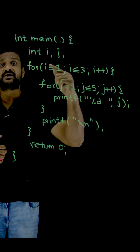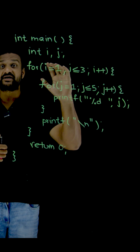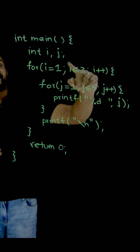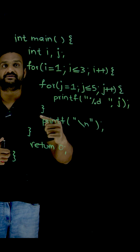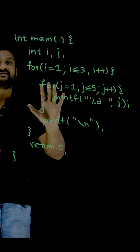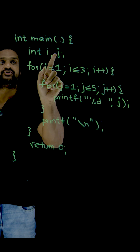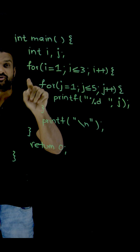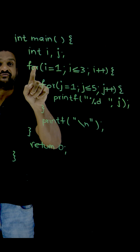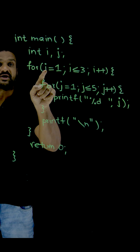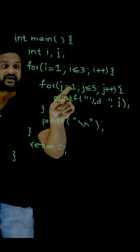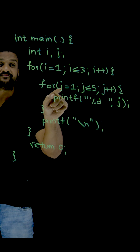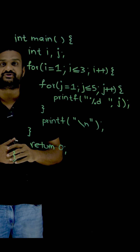What is the outcome of this loop? In this example we have two variables which are the counters for the loops. For the outer loop the counter i is used, and for the inner loop — which is the nested loop — the counter j is used.